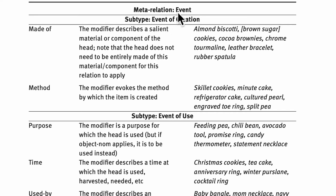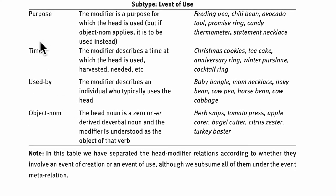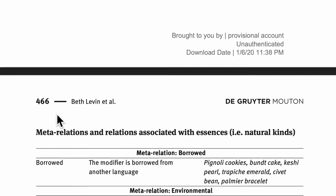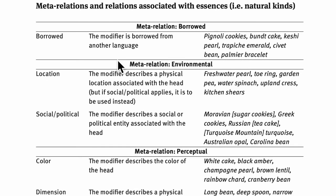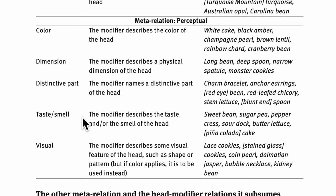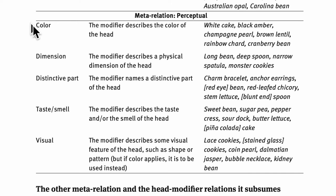In these guidelines, we begin with the event-related modifiers, which we expect to be dominant for artifacts. Made of and method are grouped under creation. Under event of use, we have purpose, time, used by, and object-nom for object nominalization. Then we move on to the essence-related modifiers. Borrowed is one subcategory of the essence-related modifier hypothesis. Environmental is another subcategory, grouping location and social-political. Perceptual is the third major subcategory, and here it groups color, dimension, distinctive part, taste, smell, and visual.